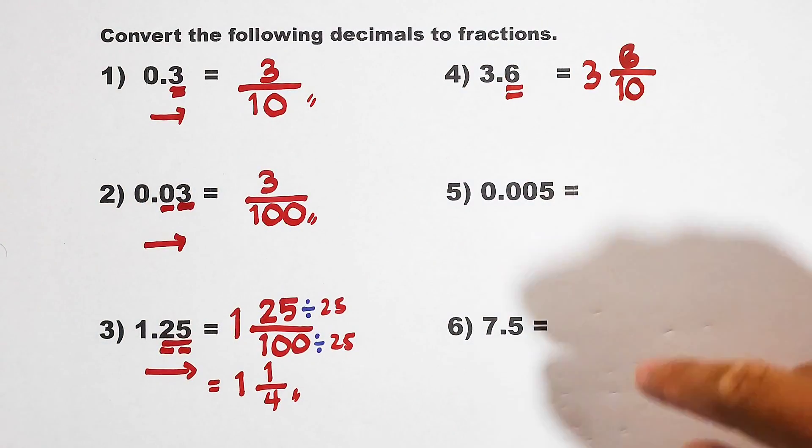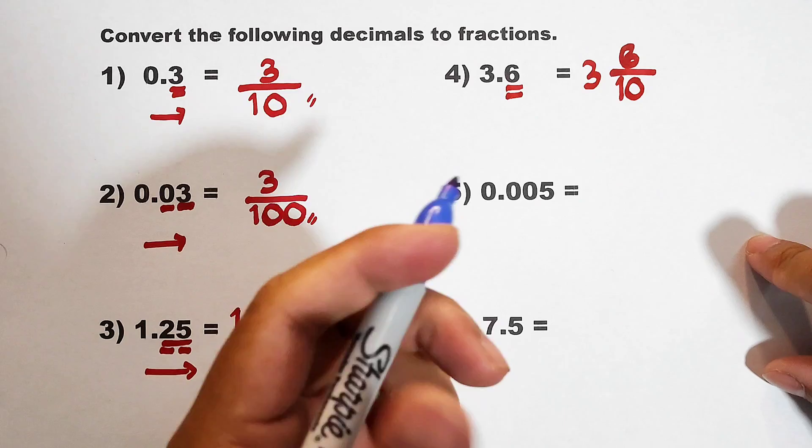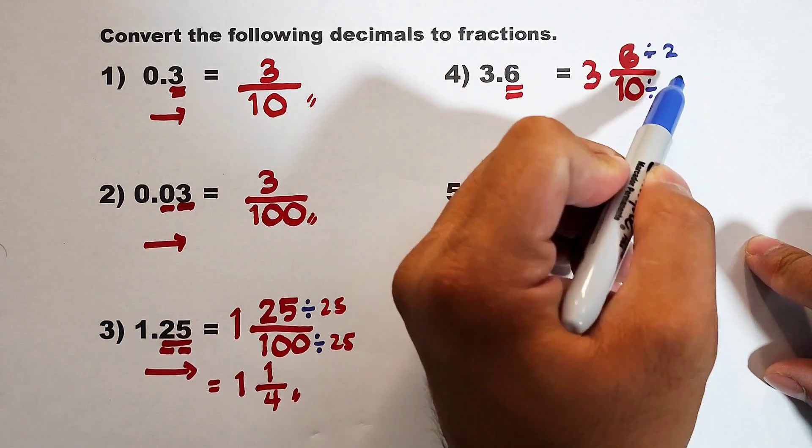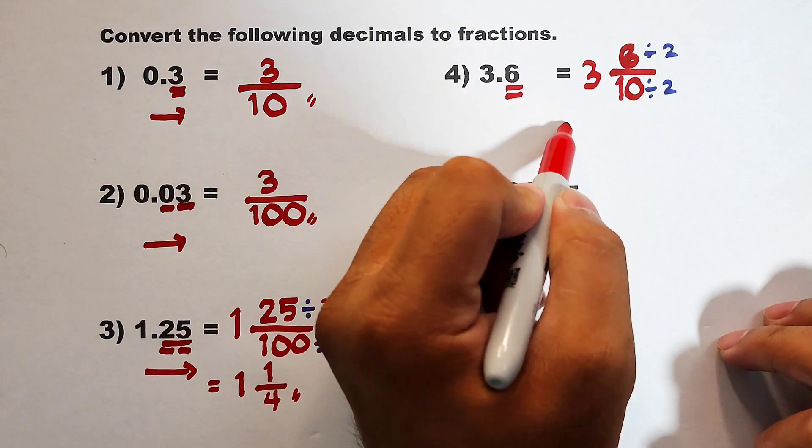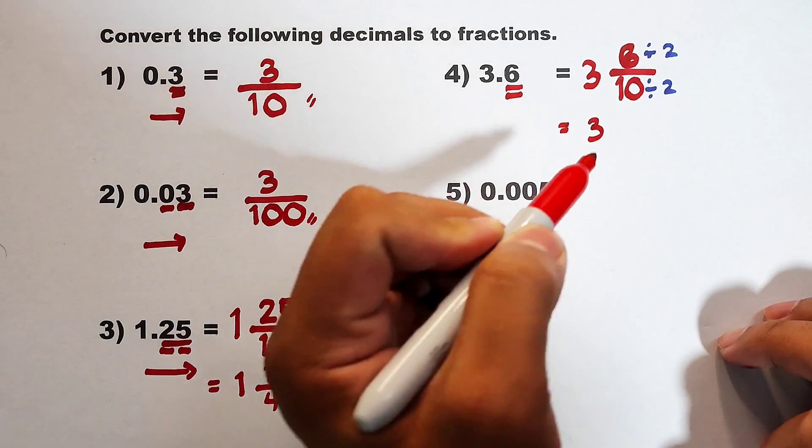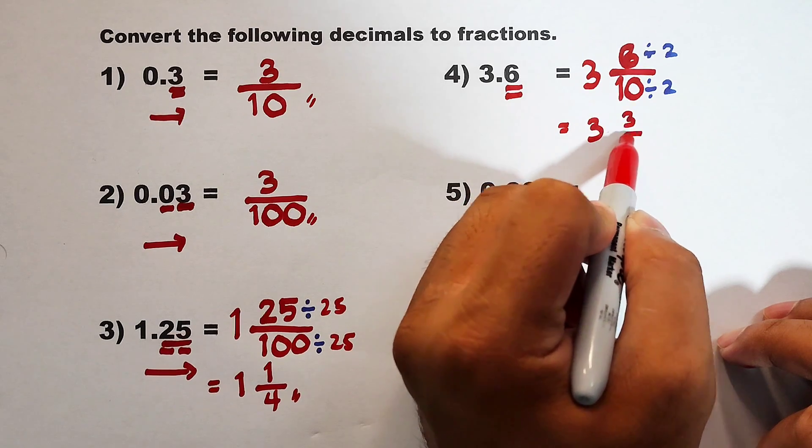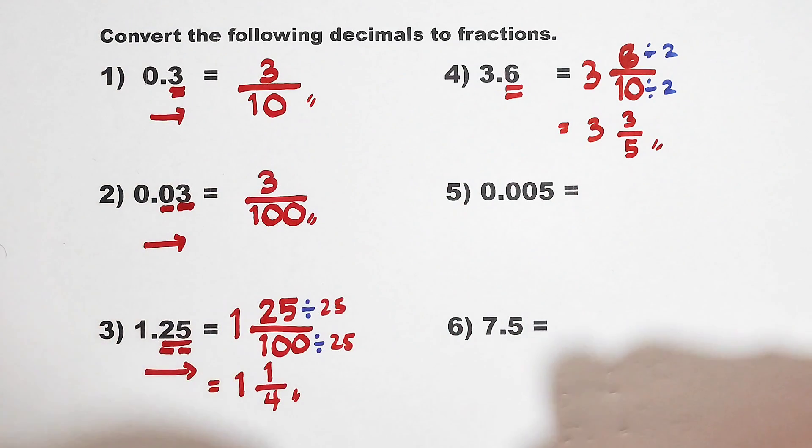Now, we can still simplify 6 over 10. The greatest common factor of 6 and 10 is 2. Meaning, we need to divide the numerator and the denominator by 2. So what will happen here? Copy your whole number, which is 3. 6 divided by 2 is 3 over 10 divided by 2, which is equal to 5. And as you can see, your 3.6 is 3 and 3 over 5 in fractional form.